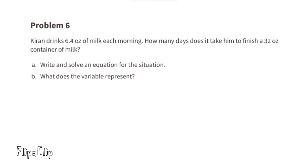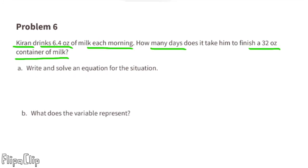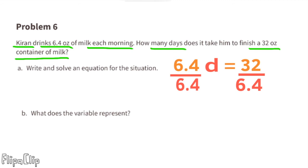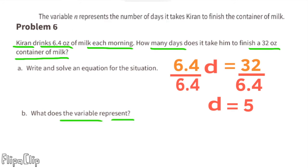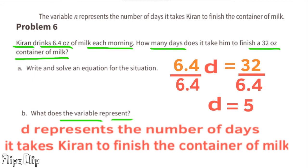Problem number 6: Kieran drinks 6.4 ounces of milk each morning. How many days does it take him to finish a 32-ounce container? Part A: write and solve an equation. We write 6.4D equals 32, where D is the number of days. Dividing both sides by 6.4 gives D equals 5. It would take Kieran 5 days to finish 32 ounces. Part B: the variable D represents the number of days it takes Kieran to finish the container of milk.